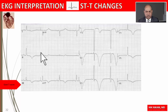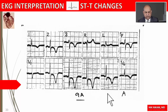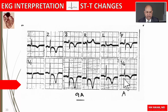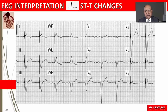Here we see deeply inverted T waves in multiple leads, which may represent global left ventricular ischemia or infarction. These changes may also be seen in patients with cerebrovascular accidents. Here's another example of symmetrically inverted T waves in the inferior leads and anterolateral leads, suggestive of left ventricular global ischemia. If this patient presents with chest pain and elevated cardiac enzymes, it may represent NSTEMI.